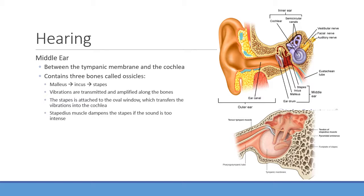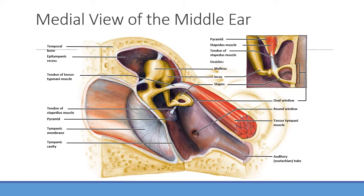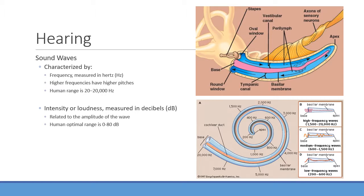The stapedius muscle is an involuntary reflex — you can't consciously control it. When the brain detects excessive sound, this muscle tenses reflexively to reduce vibration transmission to the cochlea and prevent long-term damage. This is why after a loud concert, you step outside and can't hear well — the stapedius is still tensed, reducing transmission. The endpoint of the cochlea is the round window, where sound waves eventually exit.